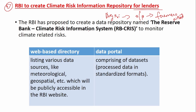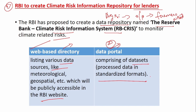RBI has proposed to create a data repository named the Reserve Bank Climate Risk Information System to monitor climate-related risk. There are two types: first, a web-based directory accessible to the public, listing various data sources like meteorological, geospatial, etc., accessible on the RBI website. Second, a data portal comprising datasets and processed data in standardized form, accessible only to regulated entities and not by the public.